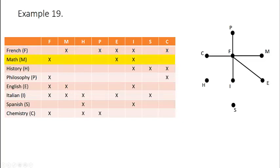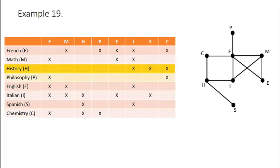Next, we focus on math. So for math, we already have an edge connecting math to French. We need to add an edge connecting math to English and Italian. For history, we need edges connecting to Italian, Spanish, and chemistry. For philosophy, we need to include the edge connected to chemistry. For English, we already have edges connecting to French and mathematics, but we need to connect an edge to Italian. We can do a quick double check to make sure that our edges for Spanish and chemistry have already been included.